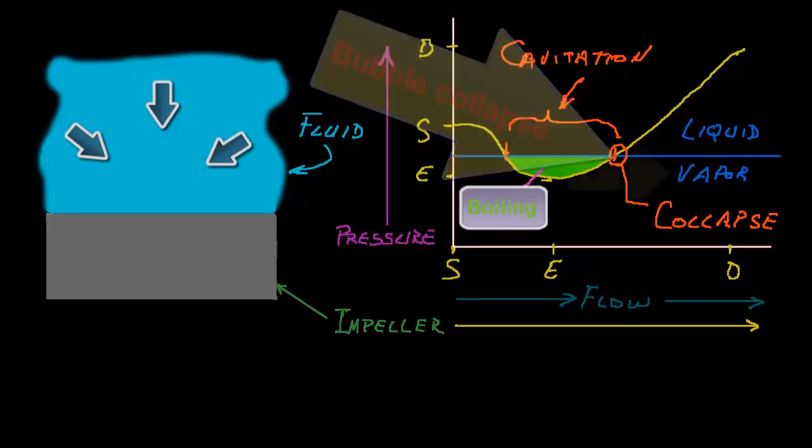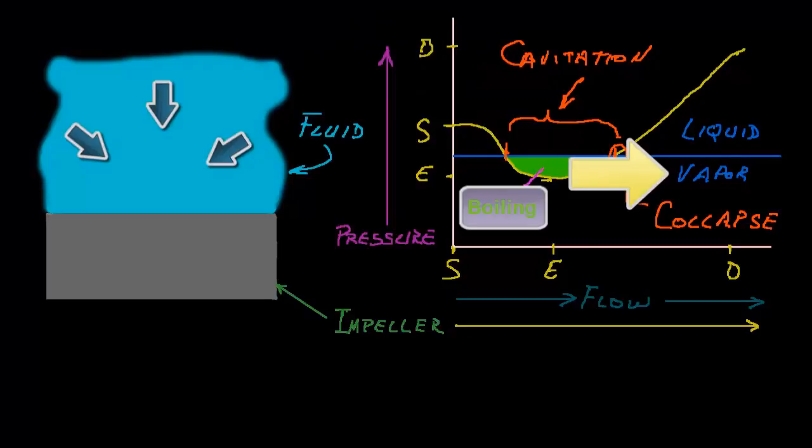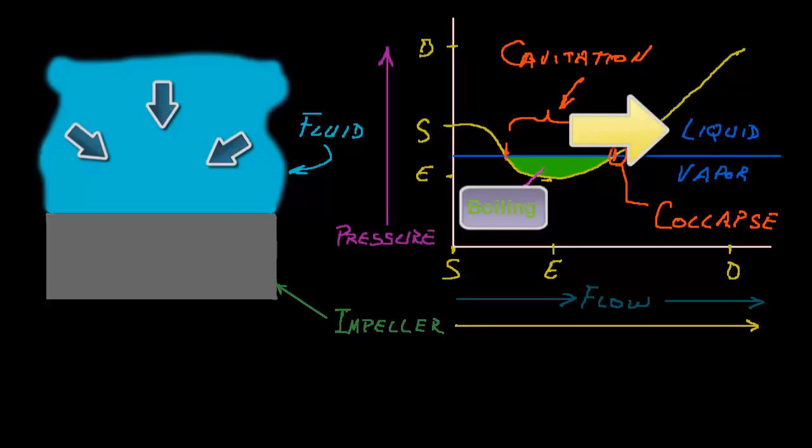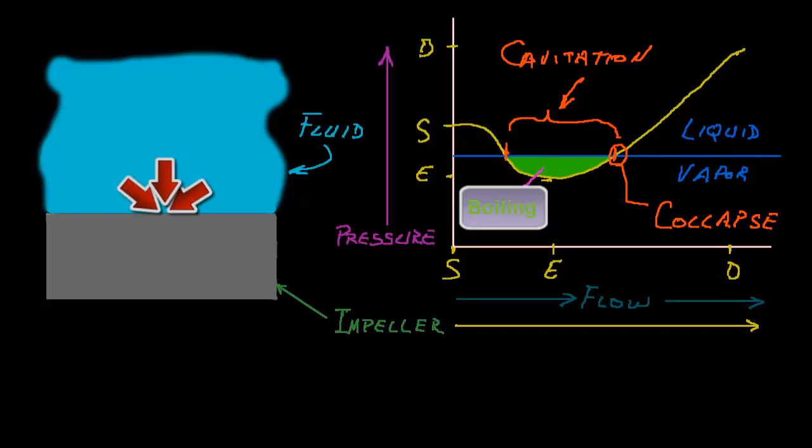Or, in other words, the gas bubble vapor quickly changes phase back to a liquid state. The collapsing gas bubble results in a high velocity, localized fluid impact shockwave on the surface of the part.